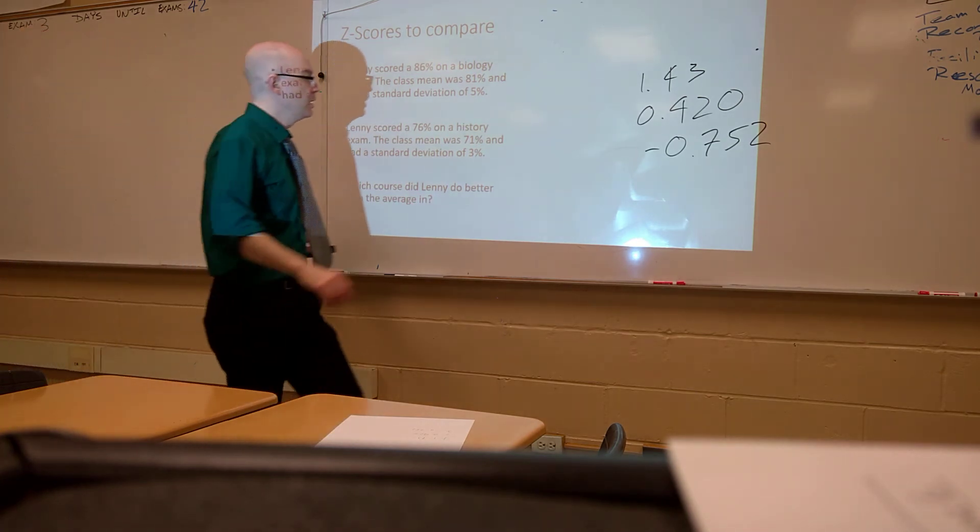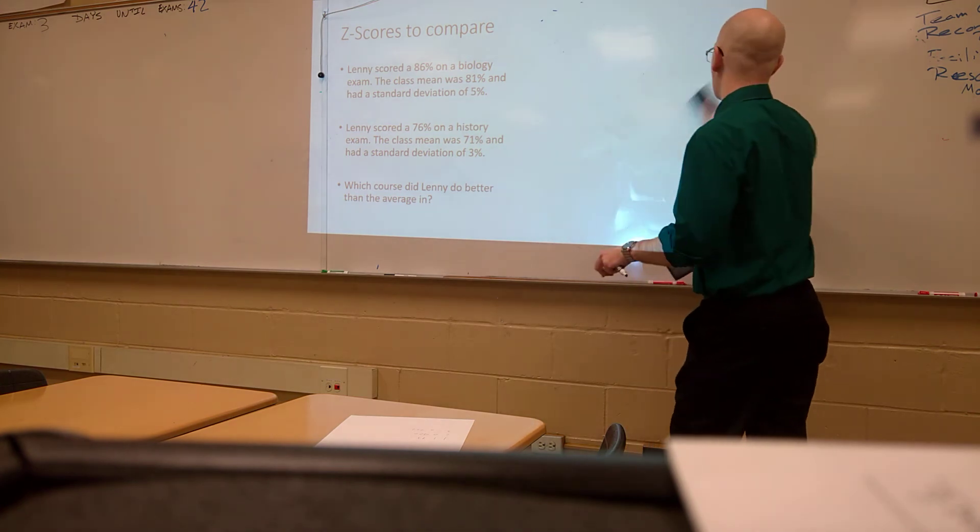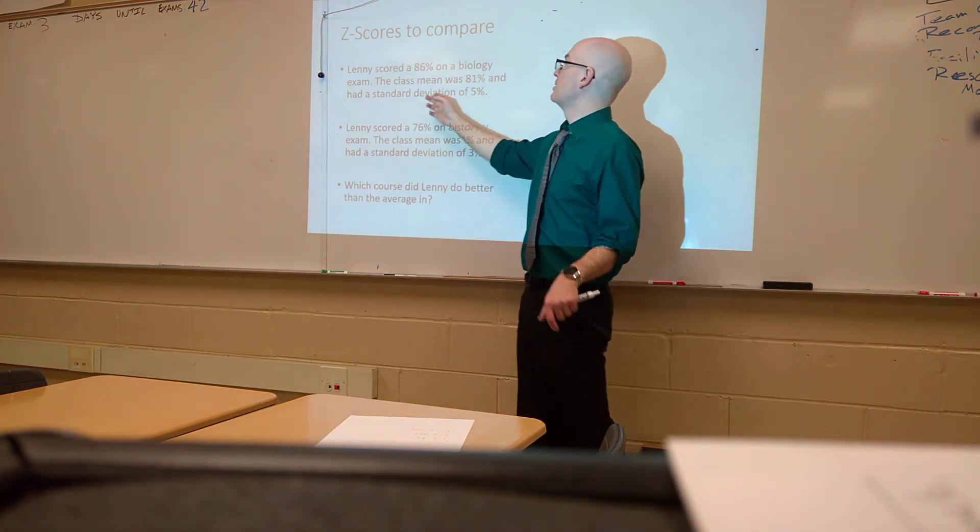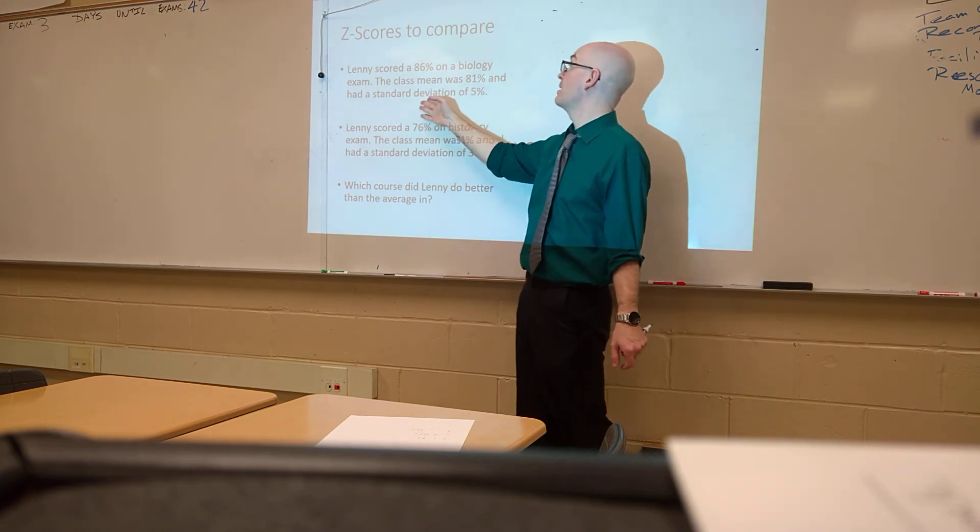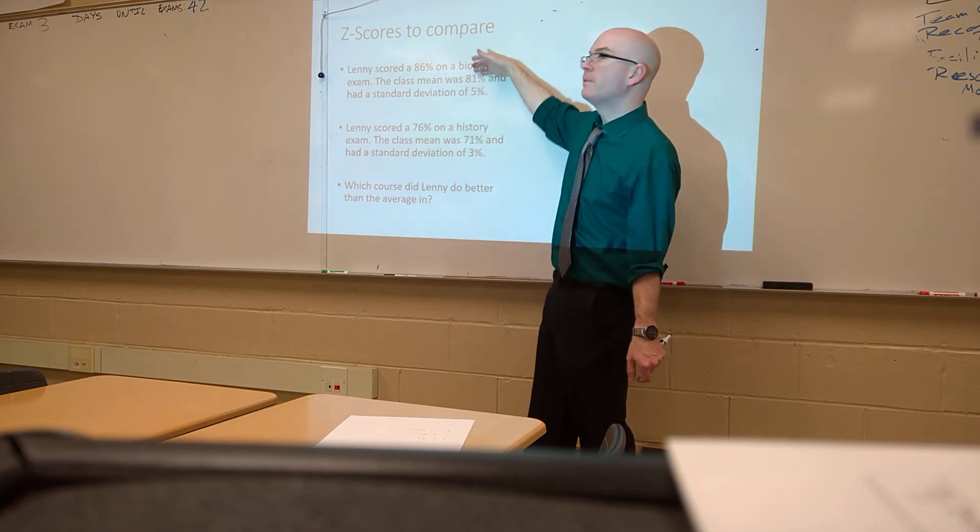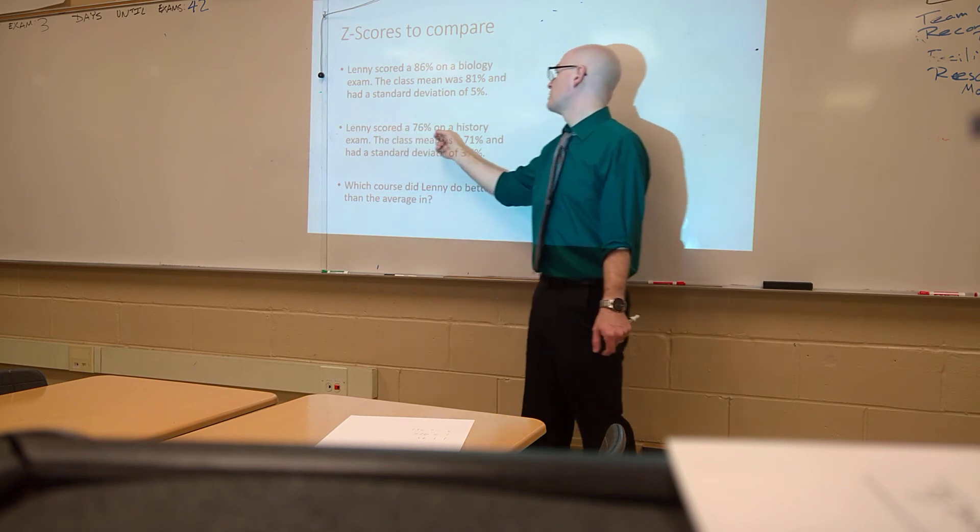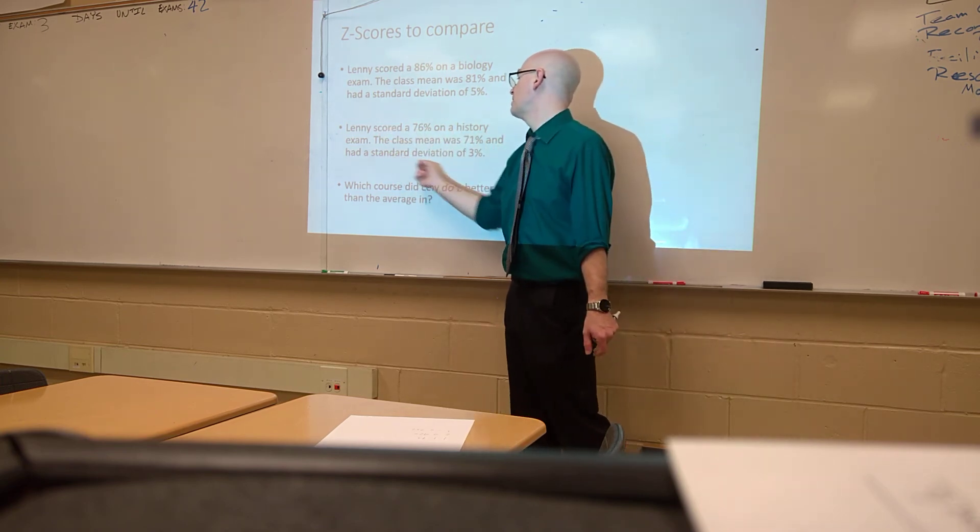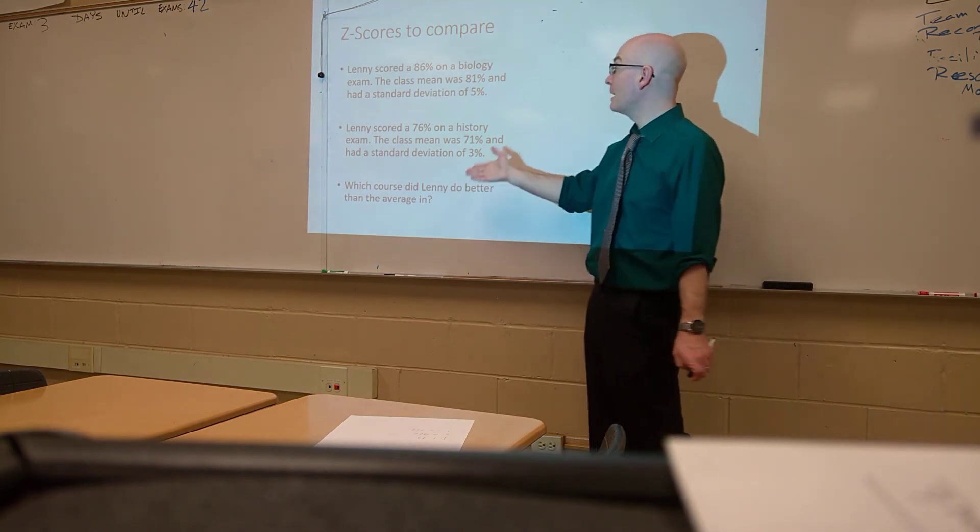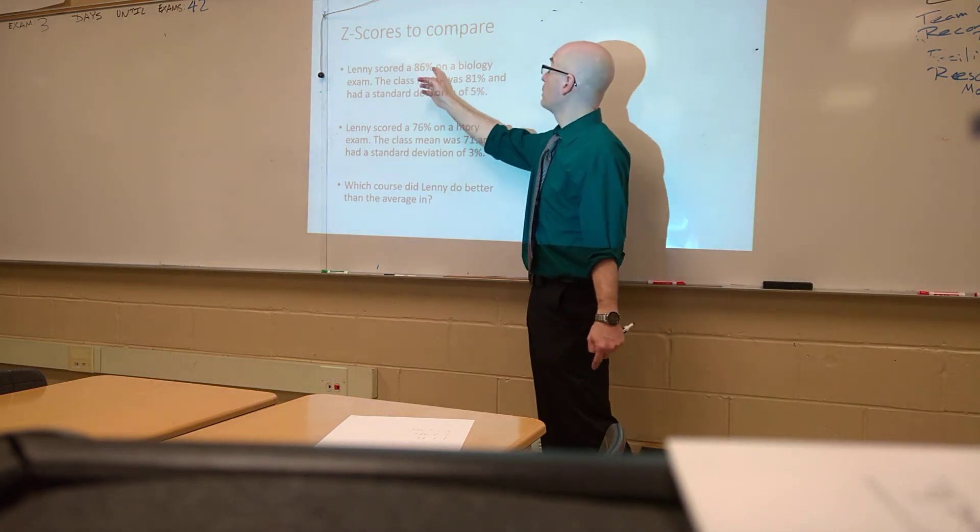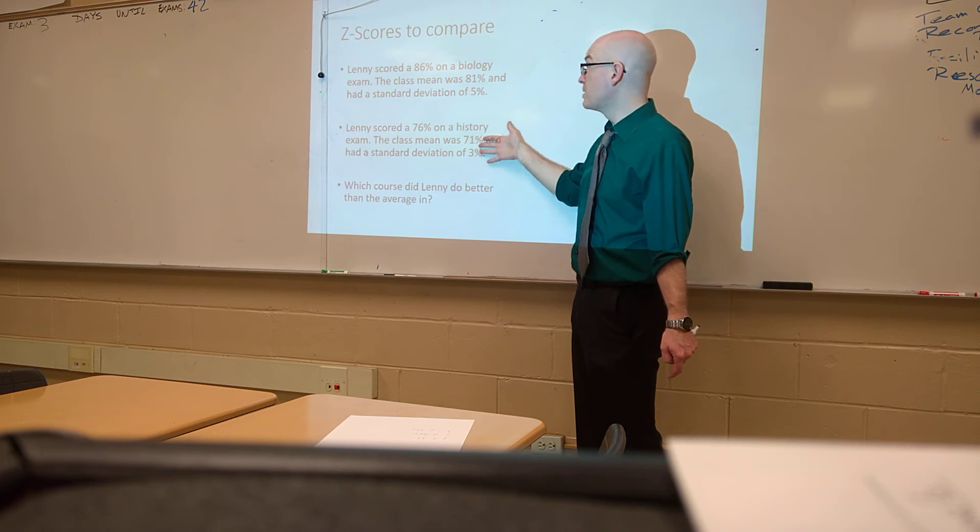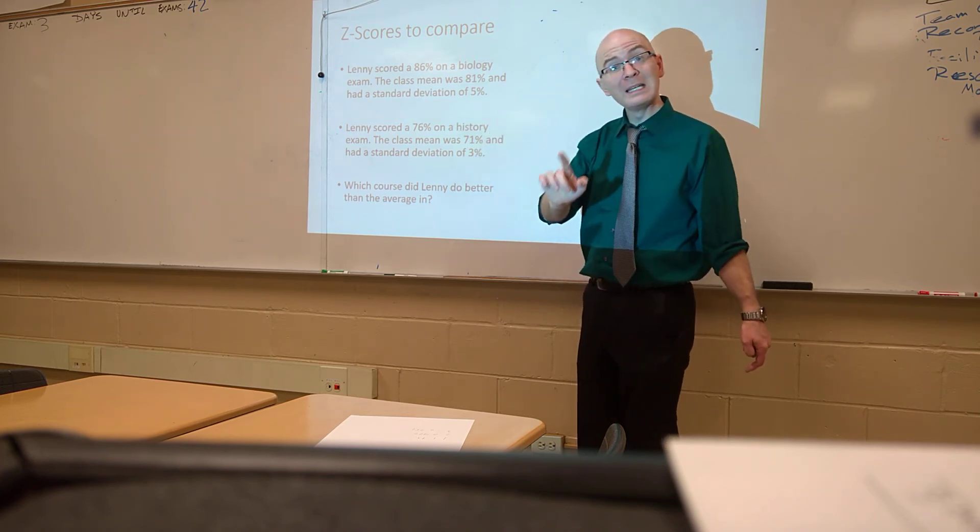Now, what's useful about these z-scores? Well, as we said in the beginning, it's useful to compare different types of data. So, let's look at an example. Lenny scored an 86 on a biology exam. The class mean was 81%, and they had a standard deviation of 5% on their scores. Think of these as points. Lenny scored a 76% on a history exam. And the class mean was 71% and had a standard deviation of 3%. Which course did Lenny do better than the average in? Now, it looks like he pretty much did the same in both. He's 5 percentage points better than the mean in both.